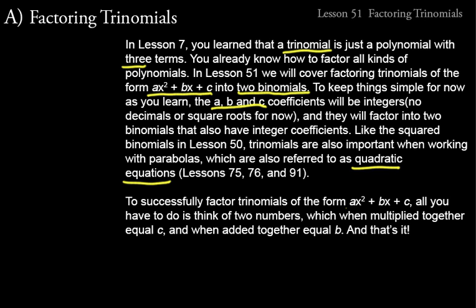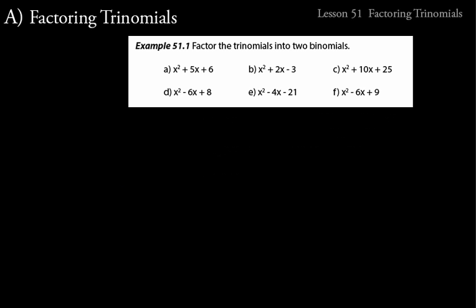To successfully factor a trinomial of the form ax² + bx + c into two binomials, all you have to do is think of two numbers which, when multiplied together, equal the coefficient c, and when added together, equal b. That's the one key thing to remember for this lesson.